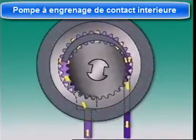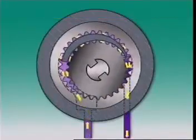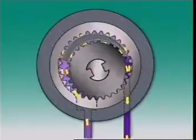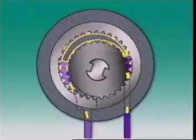An external toothed gear meshes with this inner one. Some gear teeth are meshed but others are separated by the crescent shaped part of the pump housing.